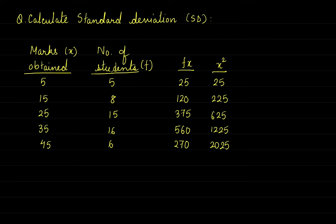Now we need to find out the FX² column. FX² means the product of the F column and the X² column. So the values will be 125, 125, 1800, 9375, and 19600.